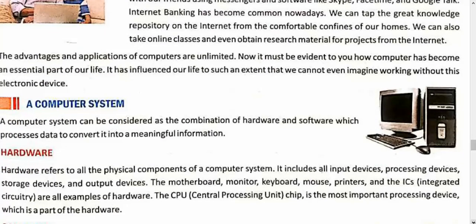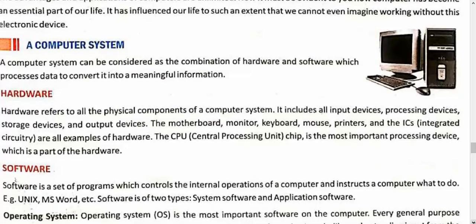Now what is a computer system? It has two parts: hardware and software. Hardware is the physical component of the computer system, which includes input devices, processing devices, storage devices, and output devices — four types of devices. Like motherboard, monitor, keyboard, mouse, printer, chips — all are hardware devices which you can physically touch. Software — these are the programs which control the operation of these devices. Software controls the operation of hardware devices; hardware devices cannot do any work without the help of software, and software works on hardware.